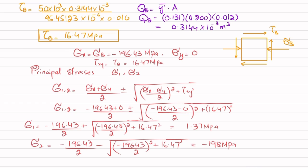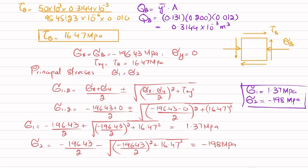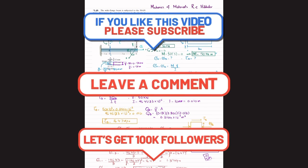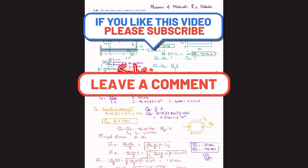So sigma_1 = 1.37 MPa and sigma_2 = -198 MPa. These are the principal stresses acting at point B due to the given loading. That was all about problem 9-41.